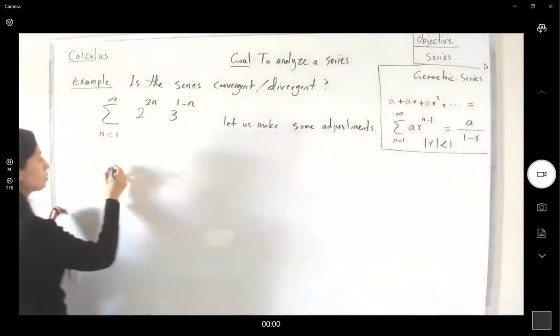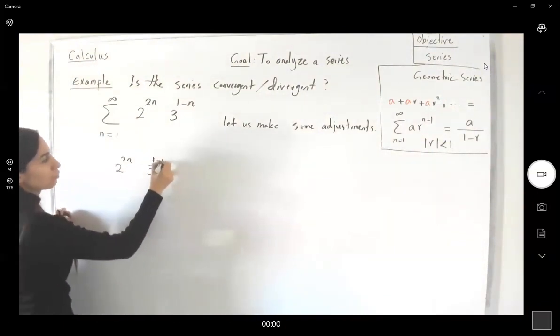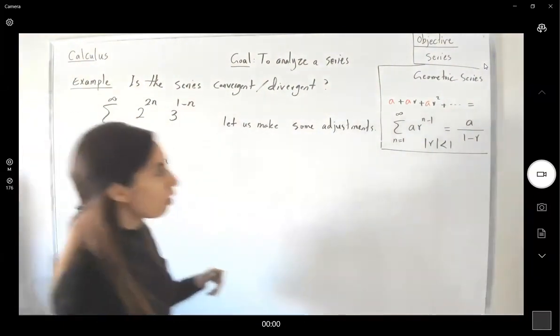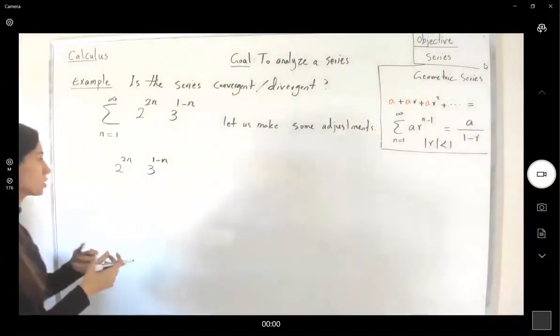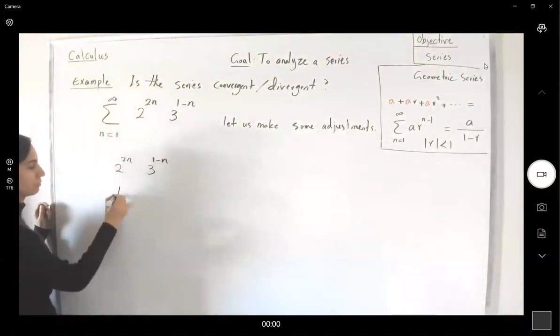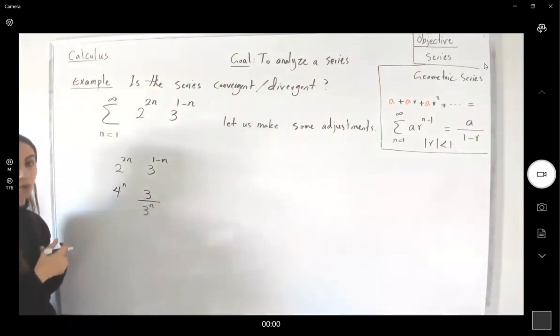So 2 raised to 2n and 3 raised to 1 minus n. My goal is to create n minus 1 as the exponent. So this is 4^n. And this is 3^1 divided by 3^n.